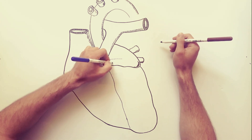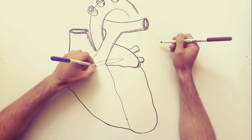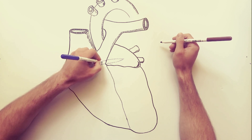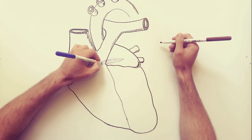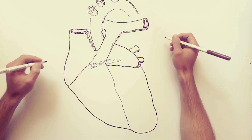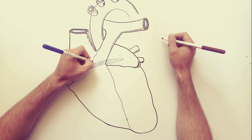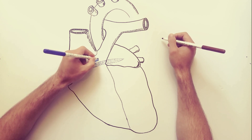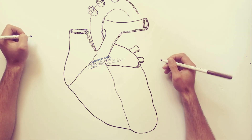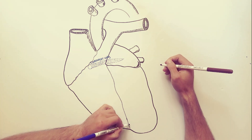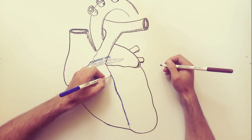The coronary sinus runs transversely in the left atrioventricular groove on the posterior side of the heart and feeds into the right atrium. The opening of the coronary sinus into the right atrium is located just medial to the opening of the inferior vena cava. We have already indicated the coronary sinus, and like the coronary sinus, the structures located posteriorly I will indicate using dots.